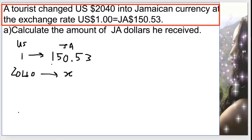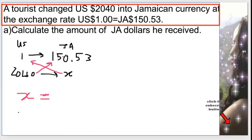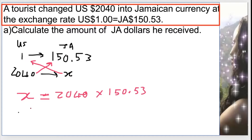So now I am going to cross multiply. So 1 times X gives me X, equal, and we're going to multiply 2,040 times 150.53. So I'm multiplying 2,040 US times 150.53. Calculating this, the amount of money that this person will have is $307,081.20.